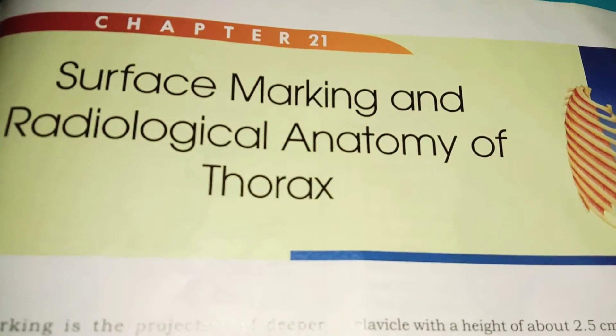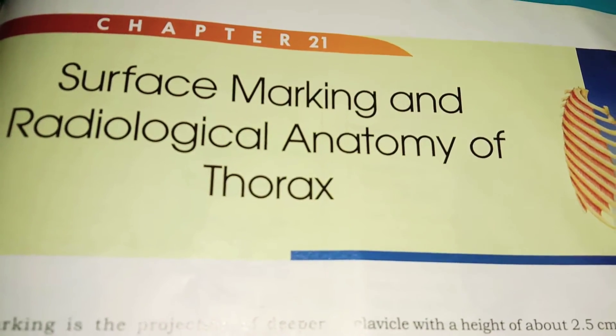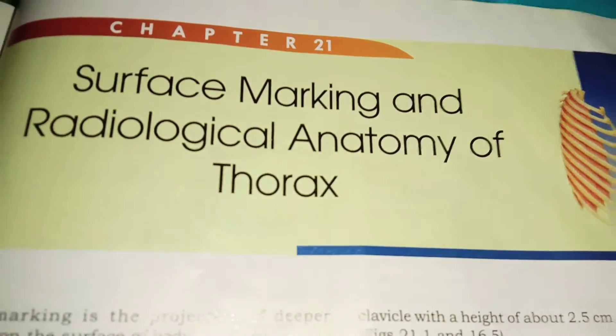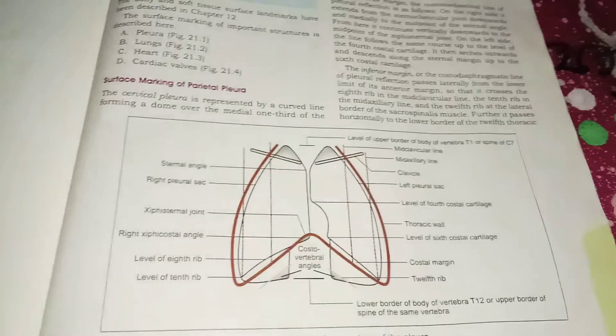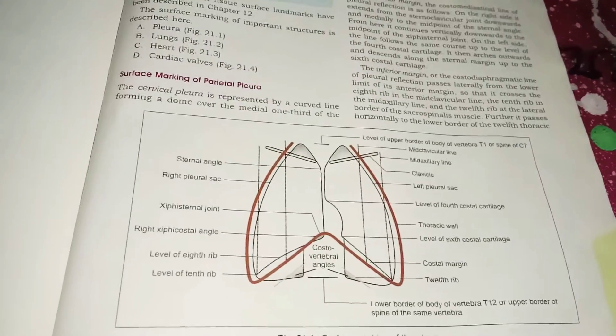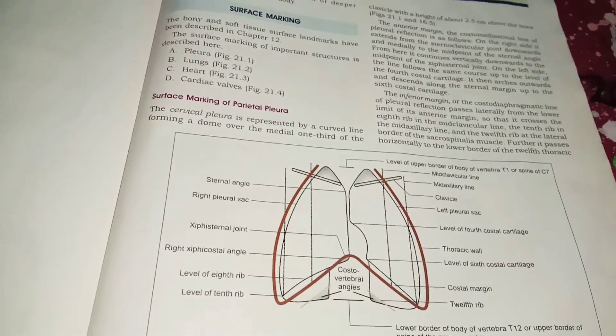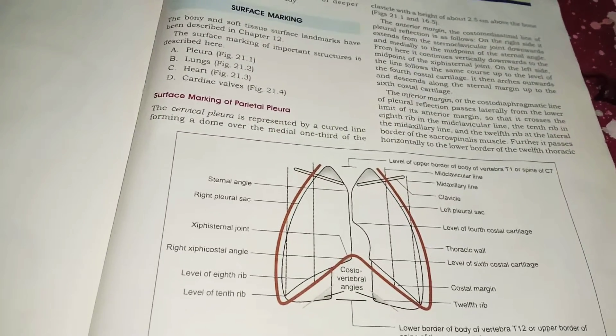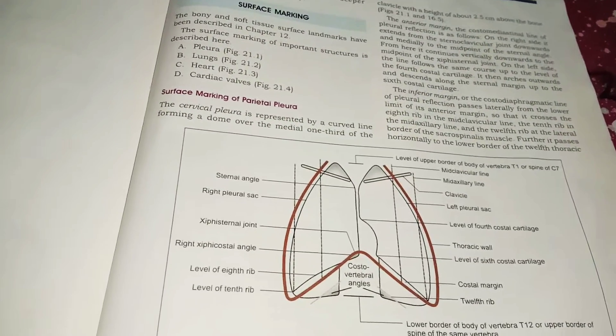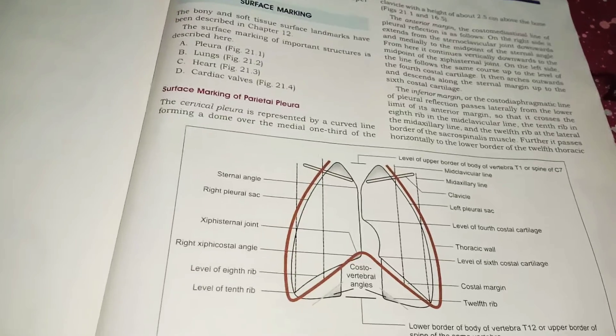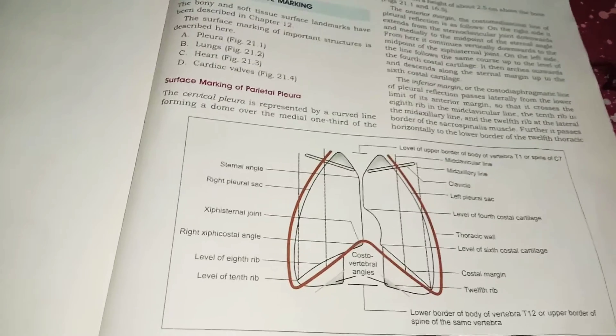We are going to start the surface marking and the radiological anatomy of thorax. First we will start with the surface marking of thorax, beginning with the parietal pleura.